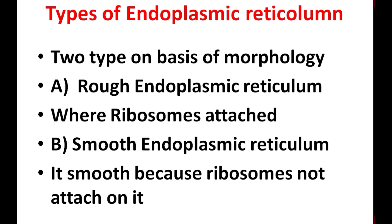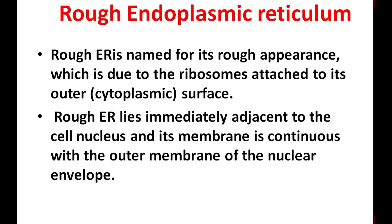What is rough endoplasmic reticulum? Rough endoplasmic reticulum — its name tells that it has a rough appearance, which is due to ribosomes attached on its outer surface. That is why it has a rough appearance because ribosomes are on its outer surface.